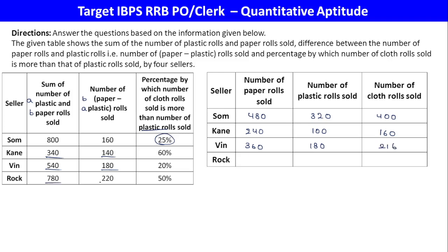Next: 800 and 200, sum is 1000, divided by 2 gives 500. 500 minus 200 equals 300. 300 minus 20 equals 280. Then 280 plus 140 equals 420. 50% extra: plastic is 140, cloth is 420. So this is the final table.